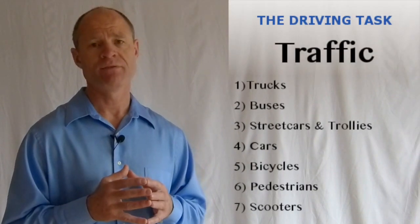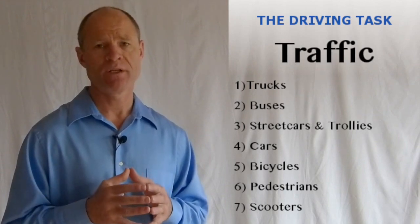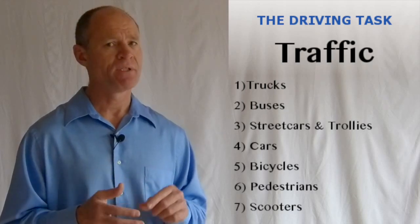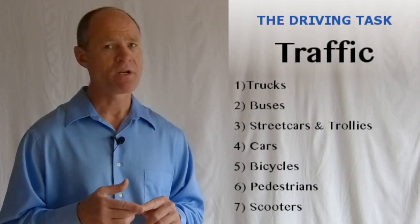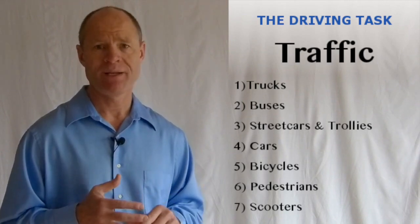Traffic, we have seven different kinds of vehicles on a roadway that comprise traffic. Trucks, buses, cars, passenger vehicles. In some cities we have streetcars and trolleys, bicycles, pedestrians.